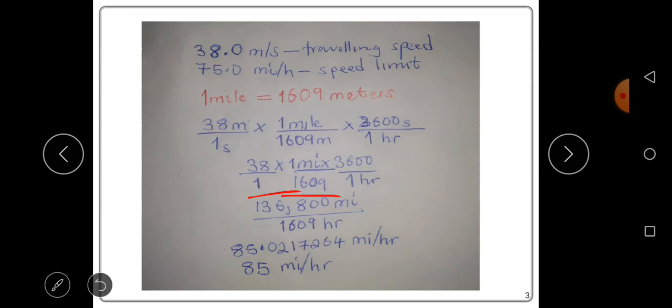miles, 136,800 miles. When you multiply the bottom part, you get 1609 hours. When you divide, you get the speed to be 85.02 miles per hour. This is the speed this car is traveling at. We can write that to two significant figures as 85 miles per hour. At this point, we can compare